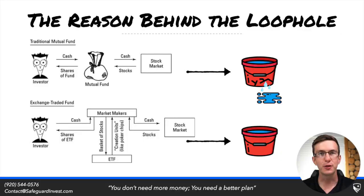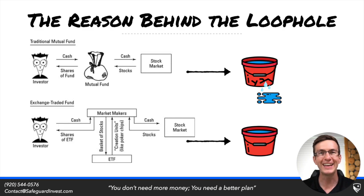This loophole specifically applies to investors with a taxable account. There are two types of funds you can invest in with a taxable account: a mutual fund or an ETF, an exchange-traded fund. The reason this loophole exists is because of the structural differences between a mutual fund and an ETF.